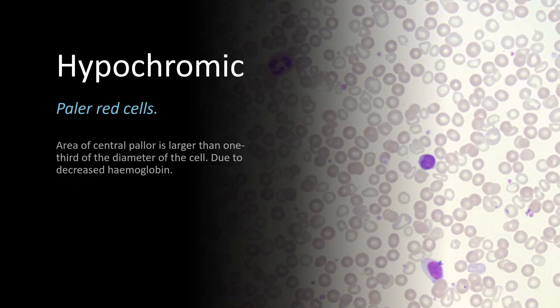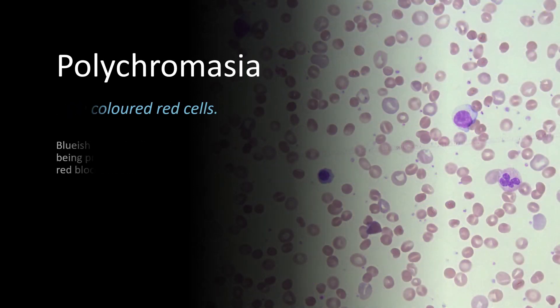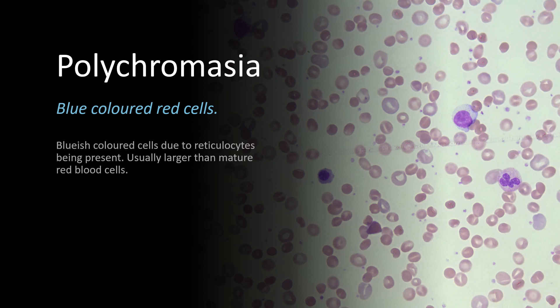We spoke earlier about how normally haemoglobinized red cells appear. Hypochromic is when there is less haemoglobin within the cells and they have much larger areas of central pallor. Polychromasia refers to the bluish appearance of red cells — these blue red cells are in fact reticulocytes and not mature erythrocytes.